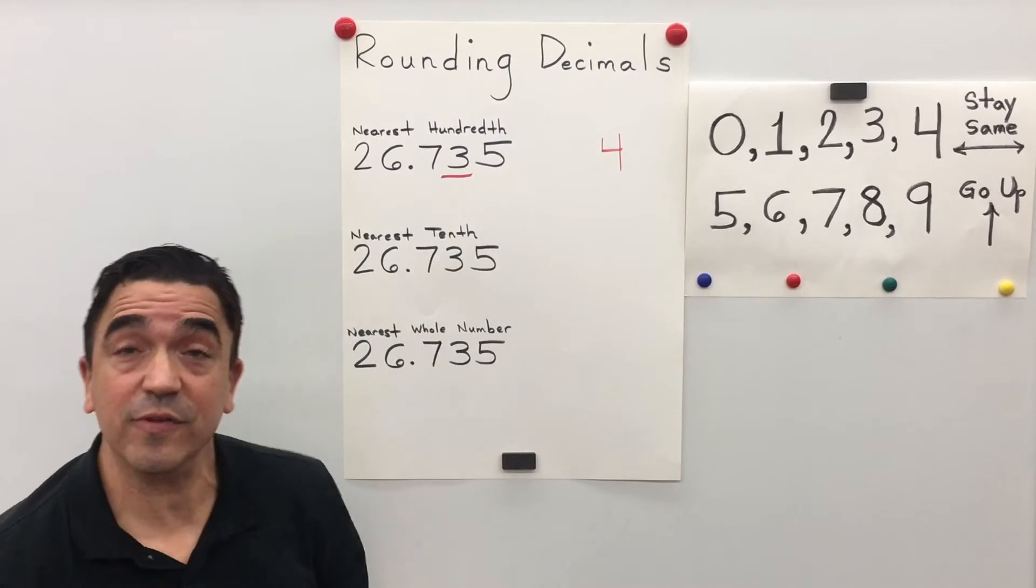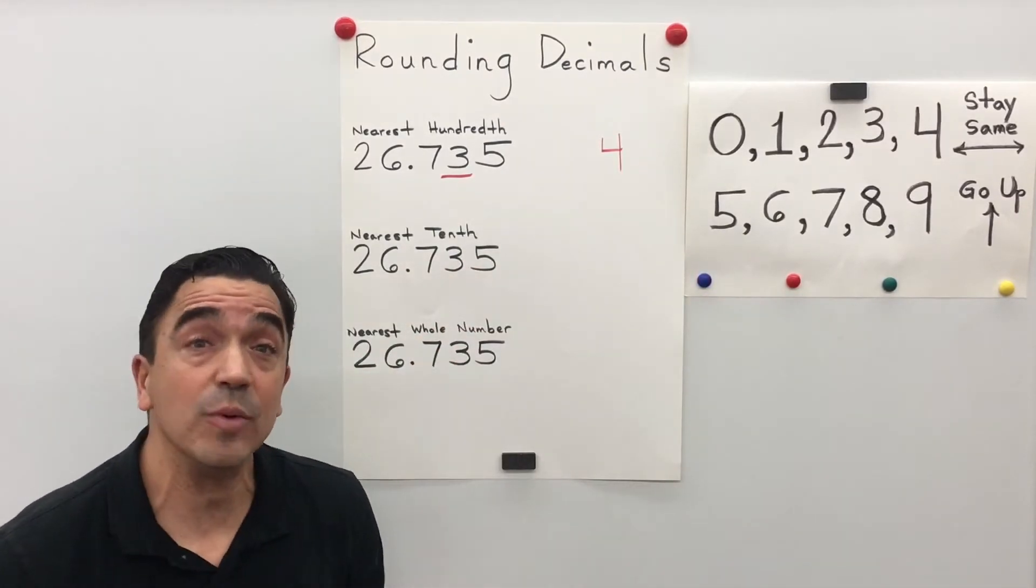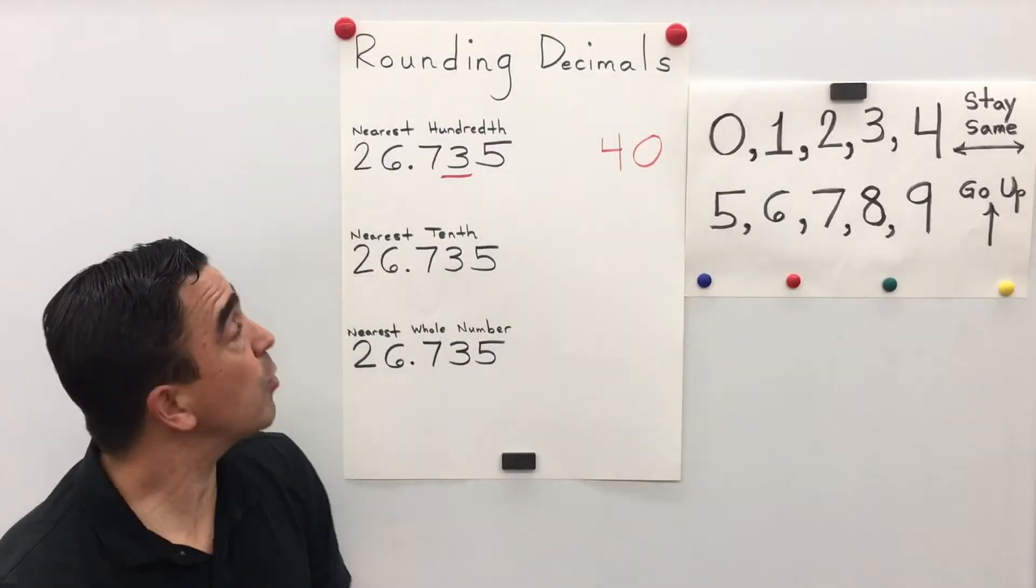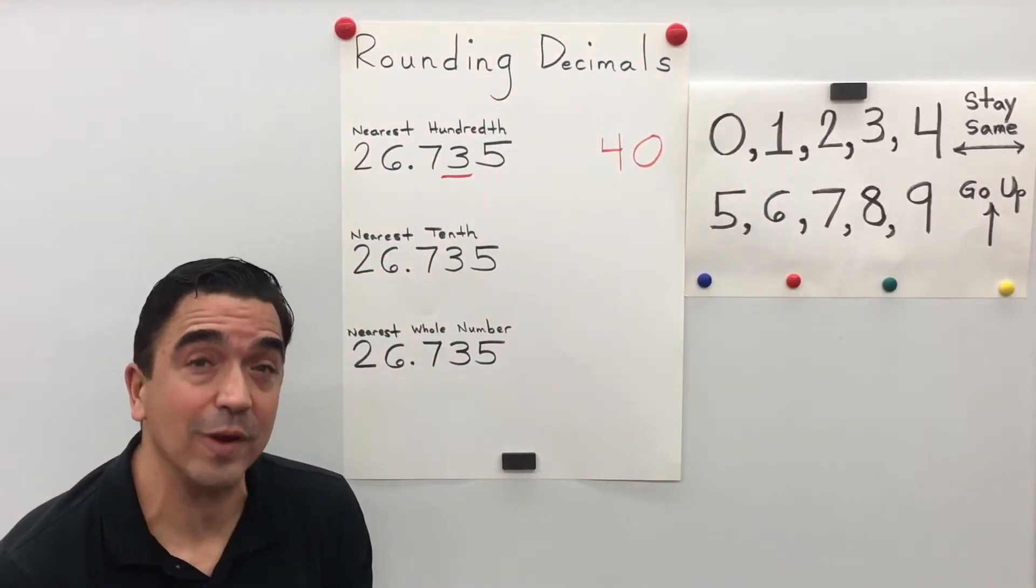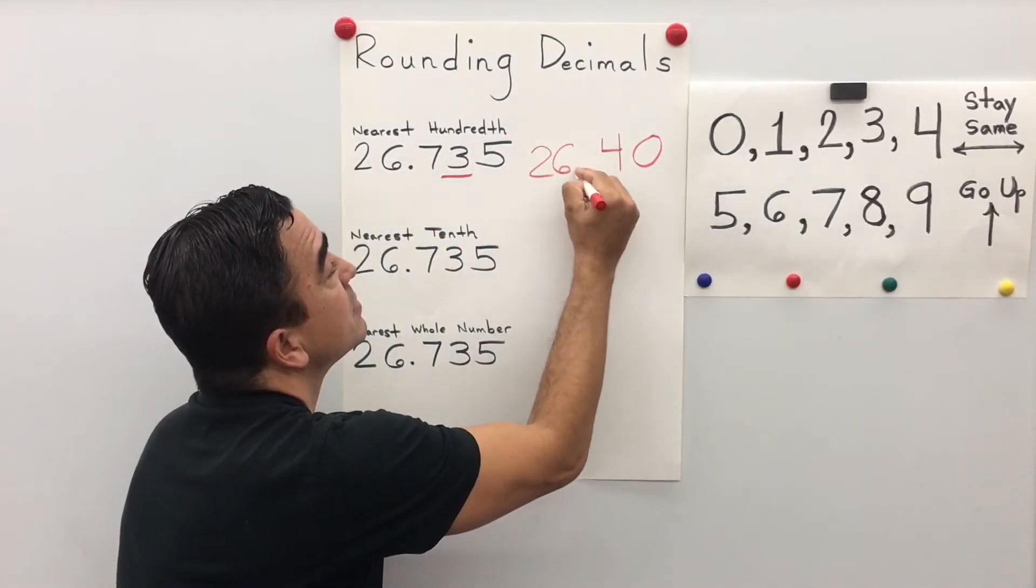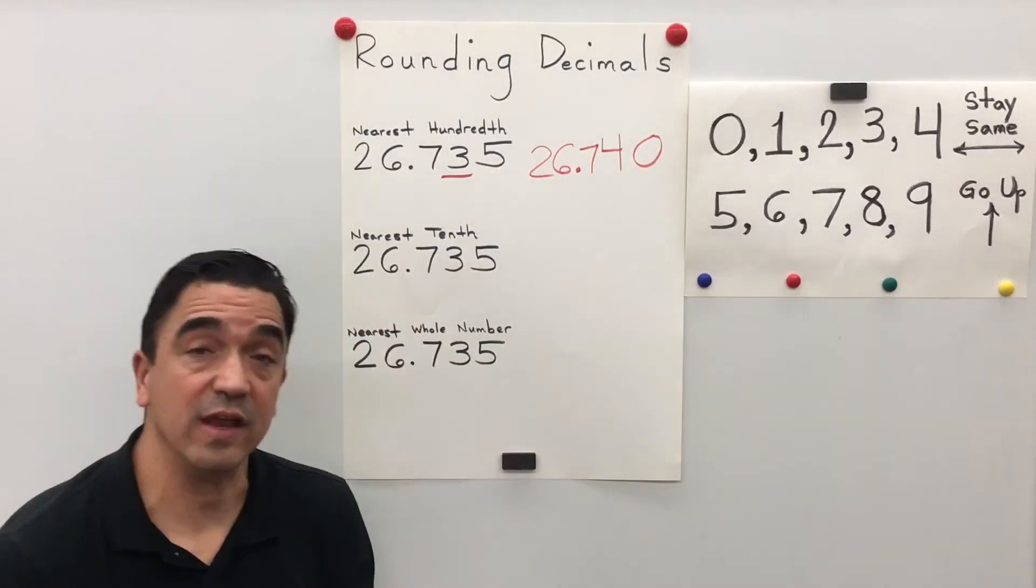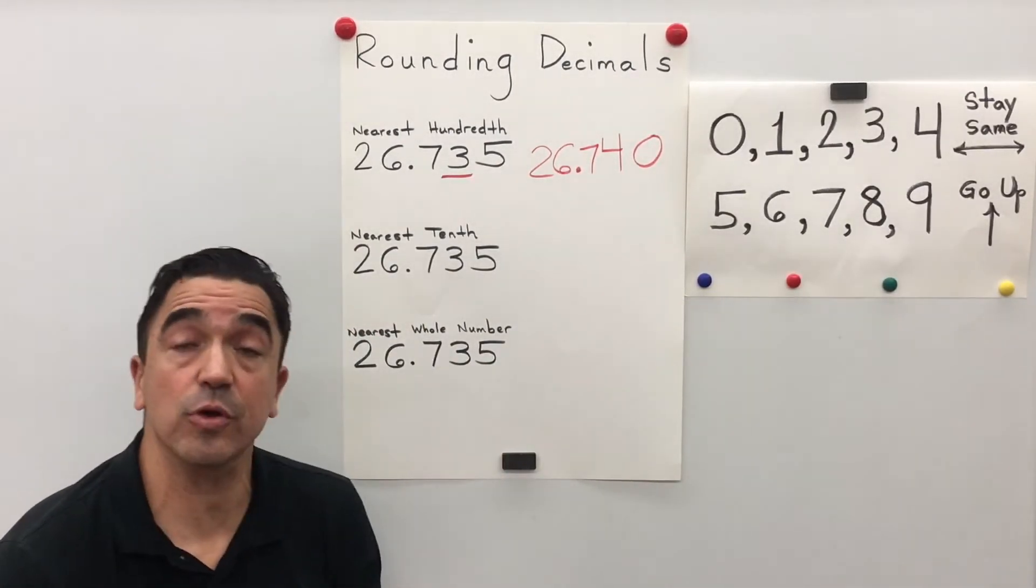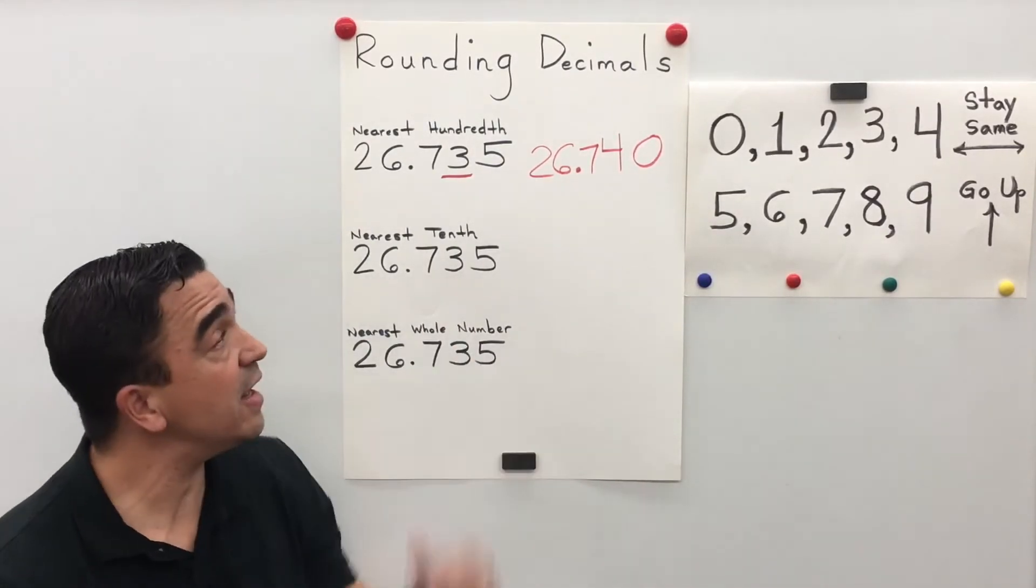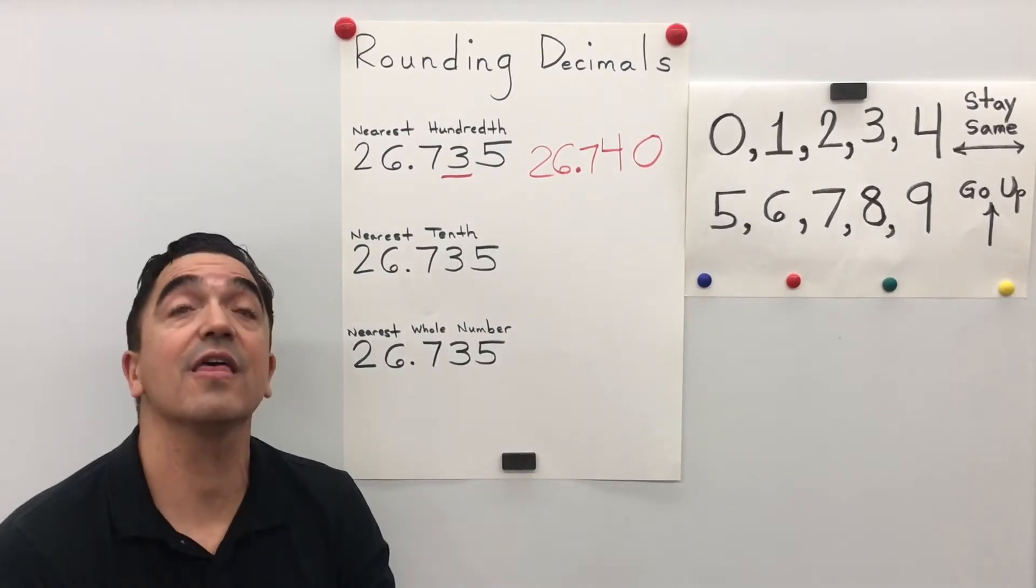So the three becomes a four and all the digits to the right become zero. So 26 and 735 thousandths rounded to the nearest hundredth is 26 and 740 thousandths.